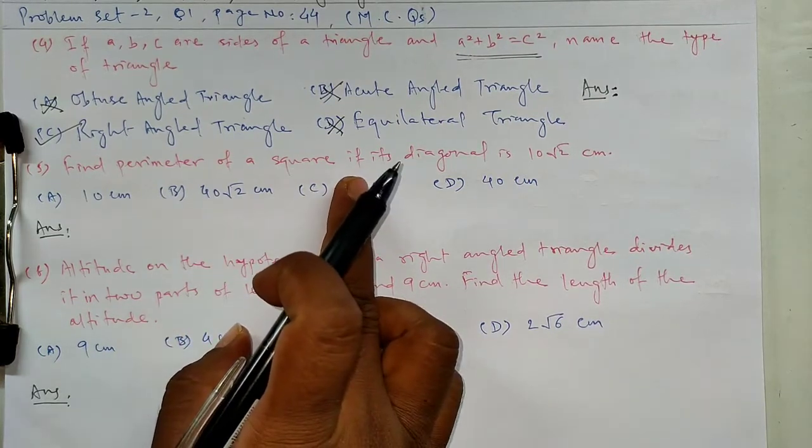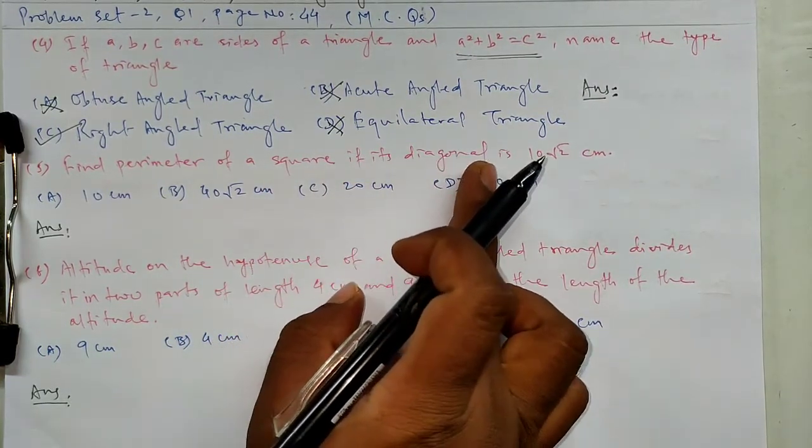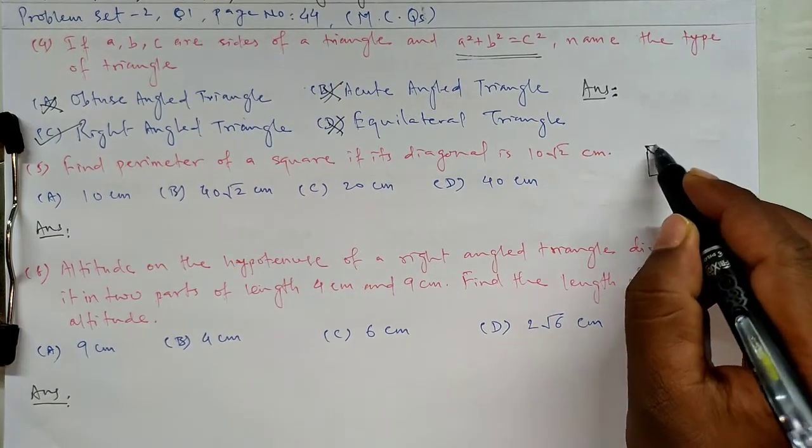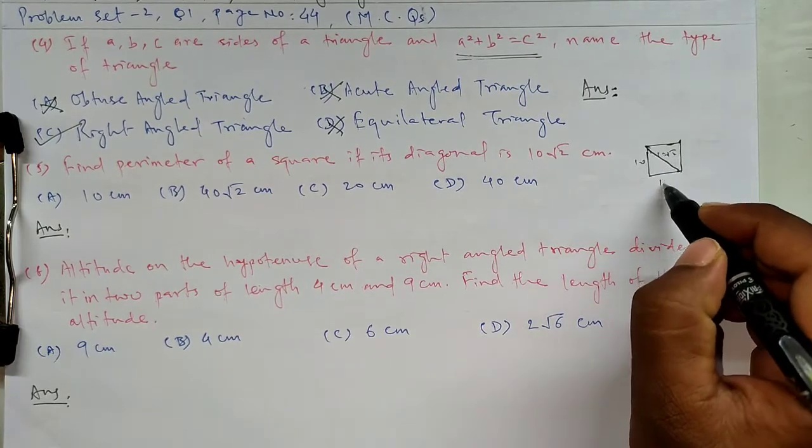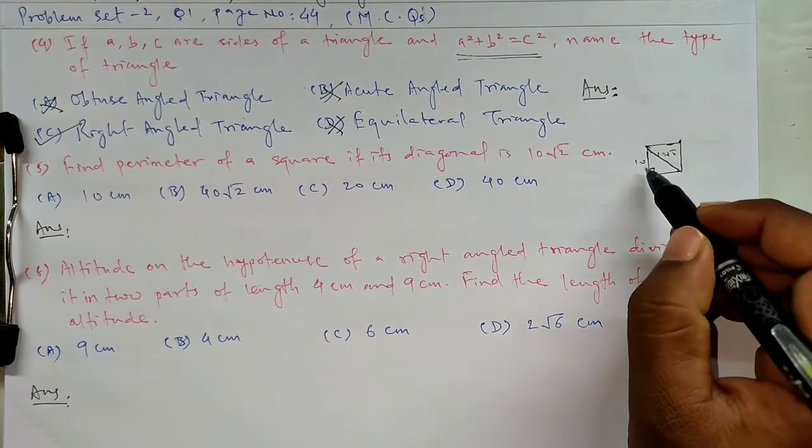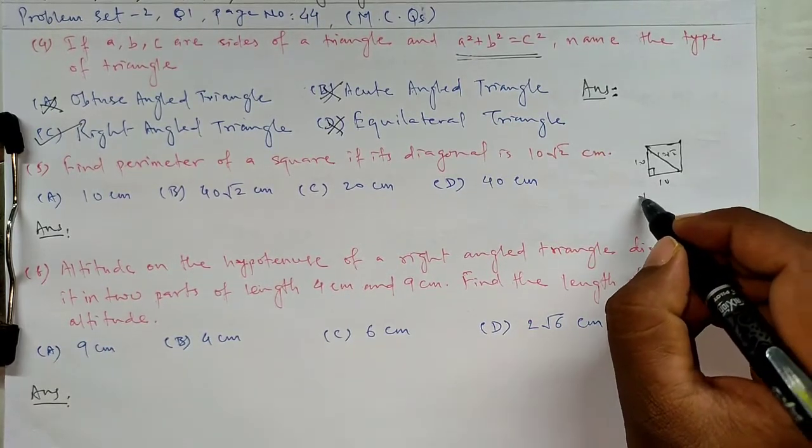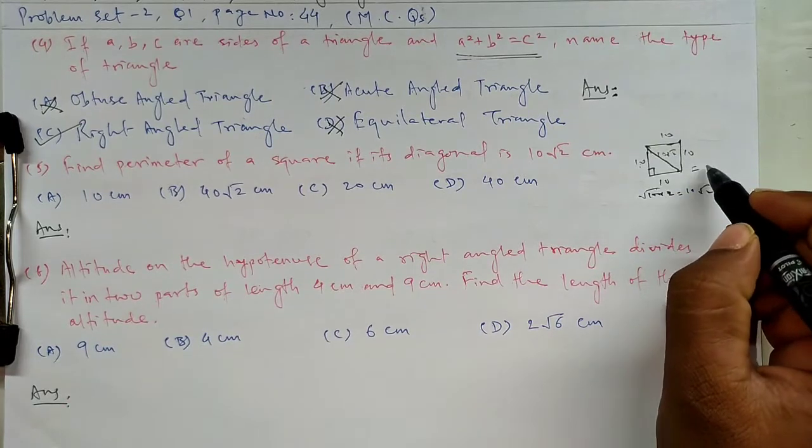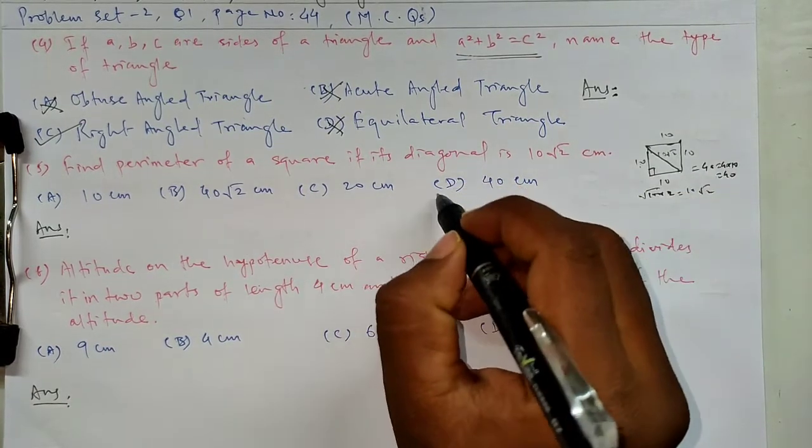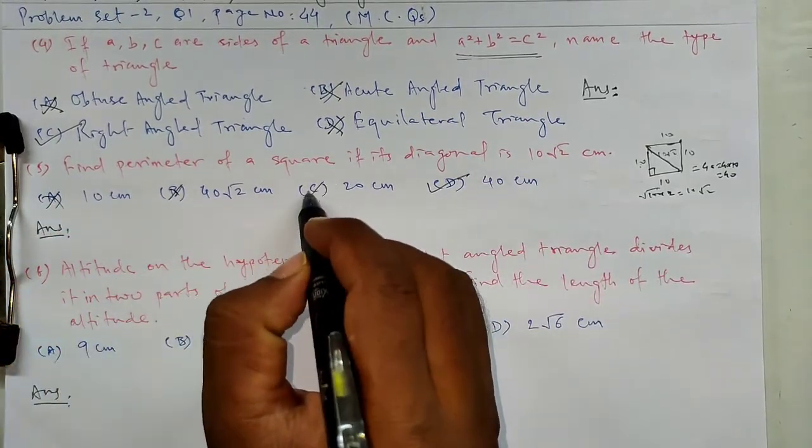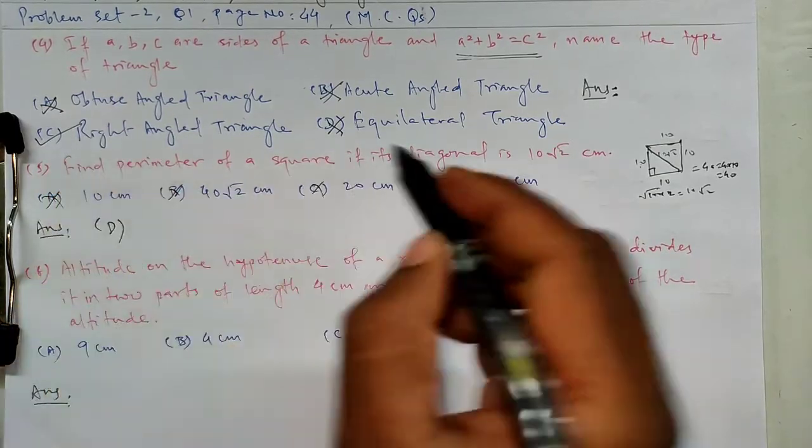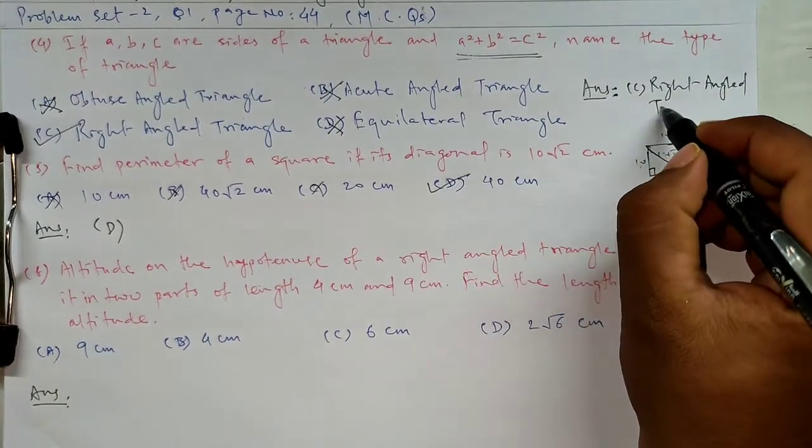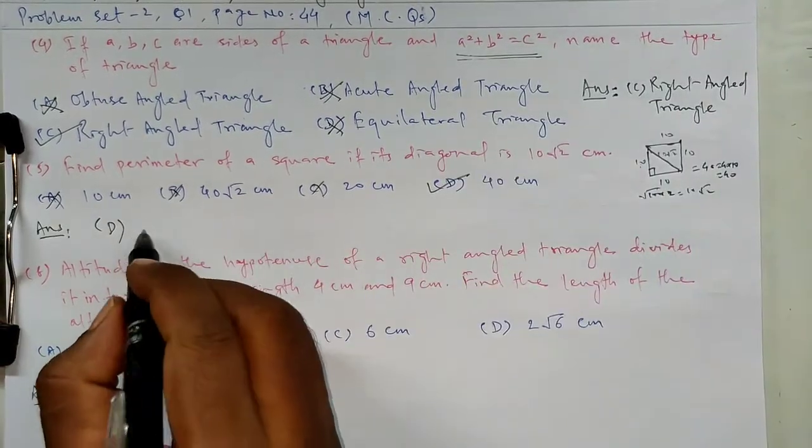Find perimeter of a square if its diagonal is 10 root 2. If it is square, 10 root 2, then we apply it. 10 square plus 10 square is 200. Square root of 200 is 10 root 2. Perimeter is 4a, 4 into 10 is 40. D option is correct, 40 cm.